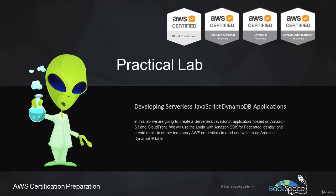Welcome back to Backspace Academy. In this lab, we're going to be developing a serverless JavaScript application, and we're going to host that on Amazon S3 and front it with CloudFront. In that application, we're going to be using the Login with Amazon Software Development Kit, which will allow our users to use their Amazon login details to assume a role, giving them temporary AWS credentials. Then we're going to use those temporary credentials to read and write to a DynamoDB table.